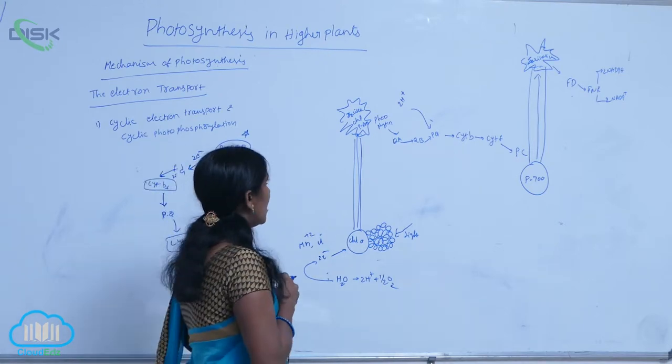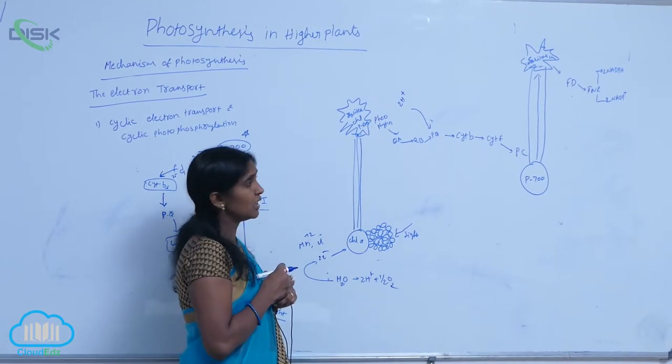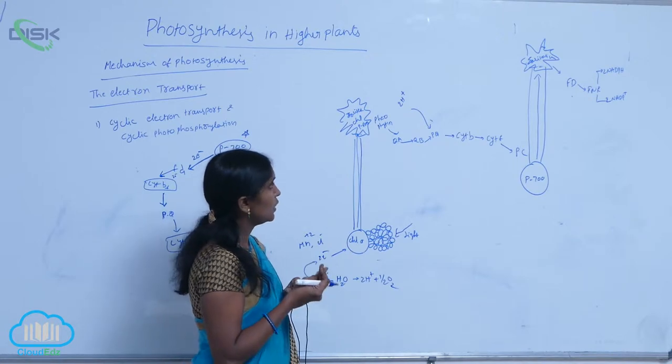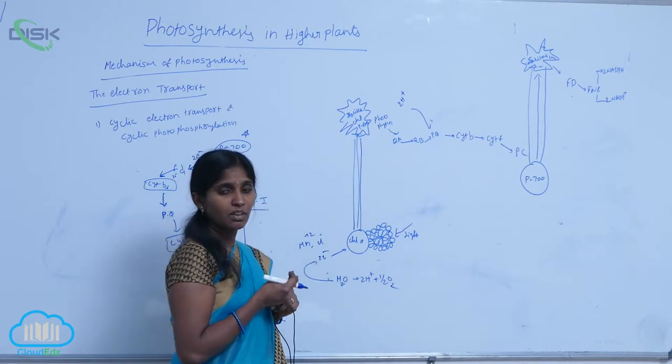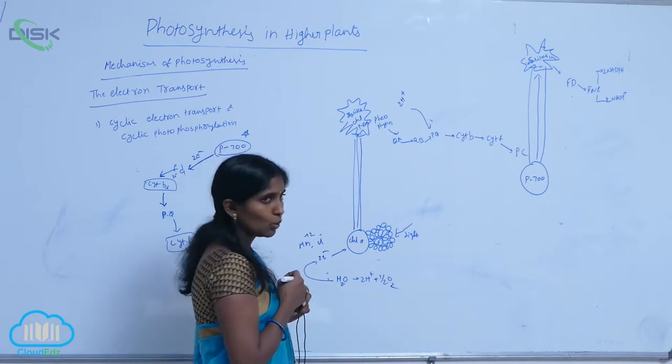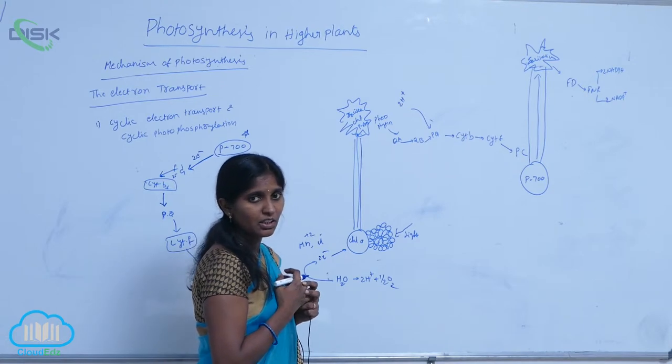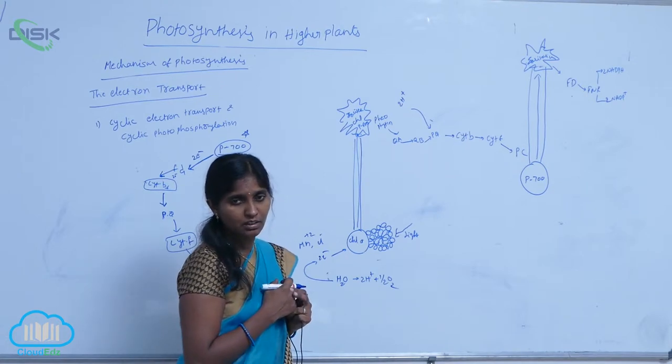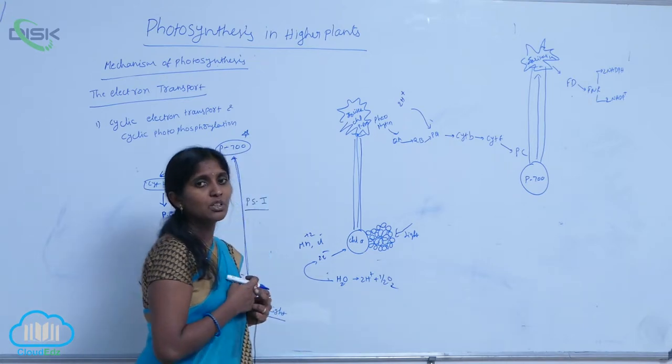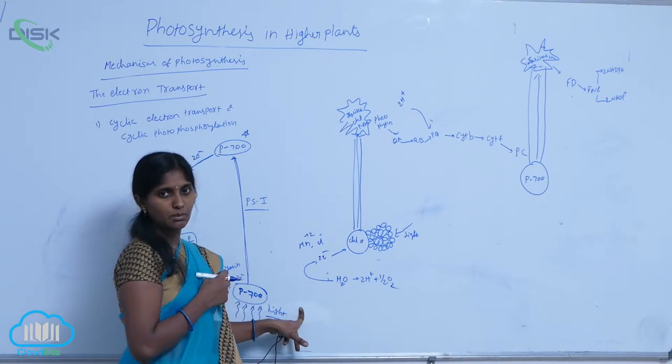After reduction, the pheophytin releases the two electrons to the plastoquinone. Then it is oxidized. It means they go for reduction again. For their reduction, there is a need for two electrons again. How are two electrons compensated? For compensation of two electrons, here the water molecule is split.